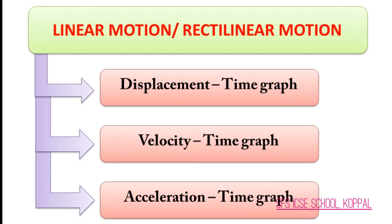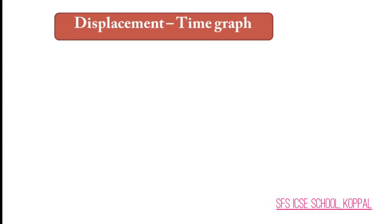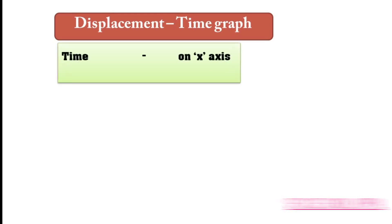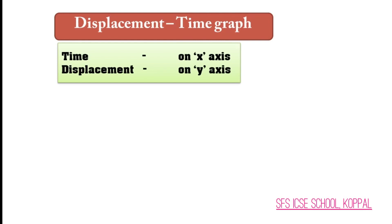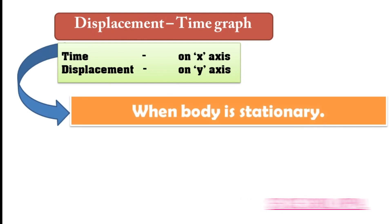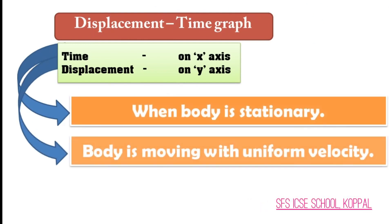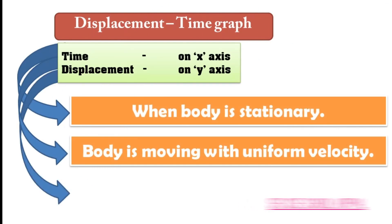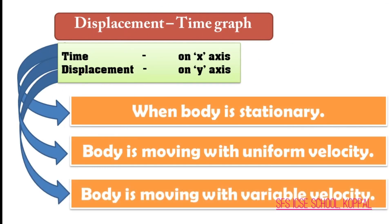Number one: displacement-time graph. Time is taken on the x-axis and displacement is taken on the y-axis. There are mainly three types of displacement-time graph: number one when the body is stationary, number two when the body is moving with uniform velocity, and number three when the body is moving with variable velocity.